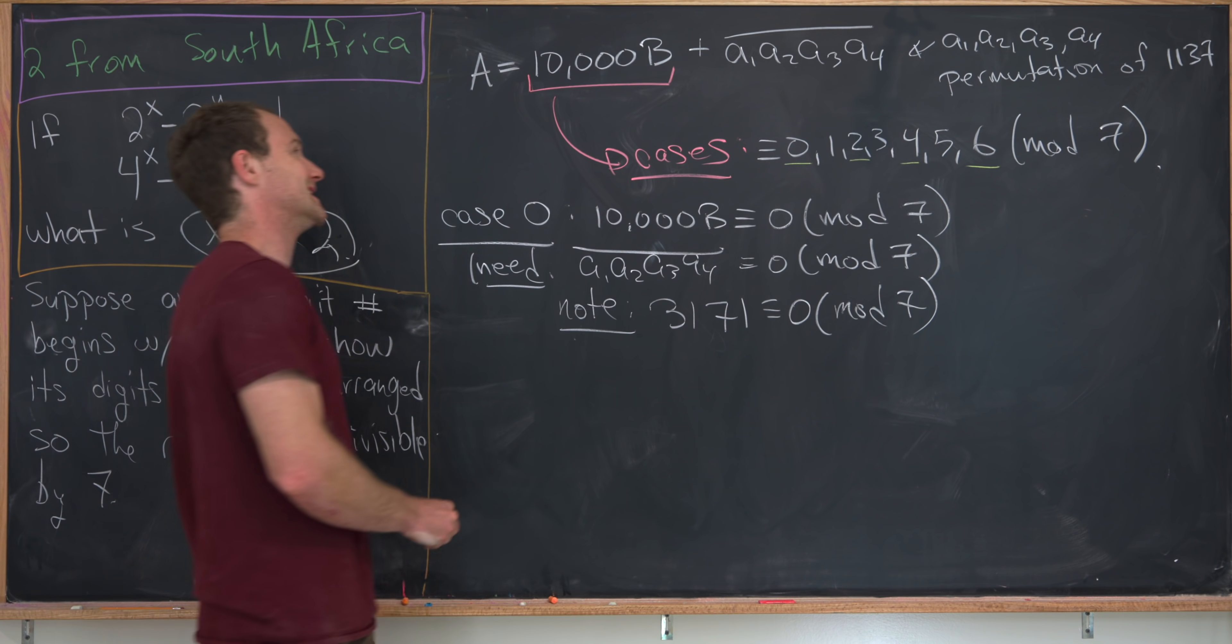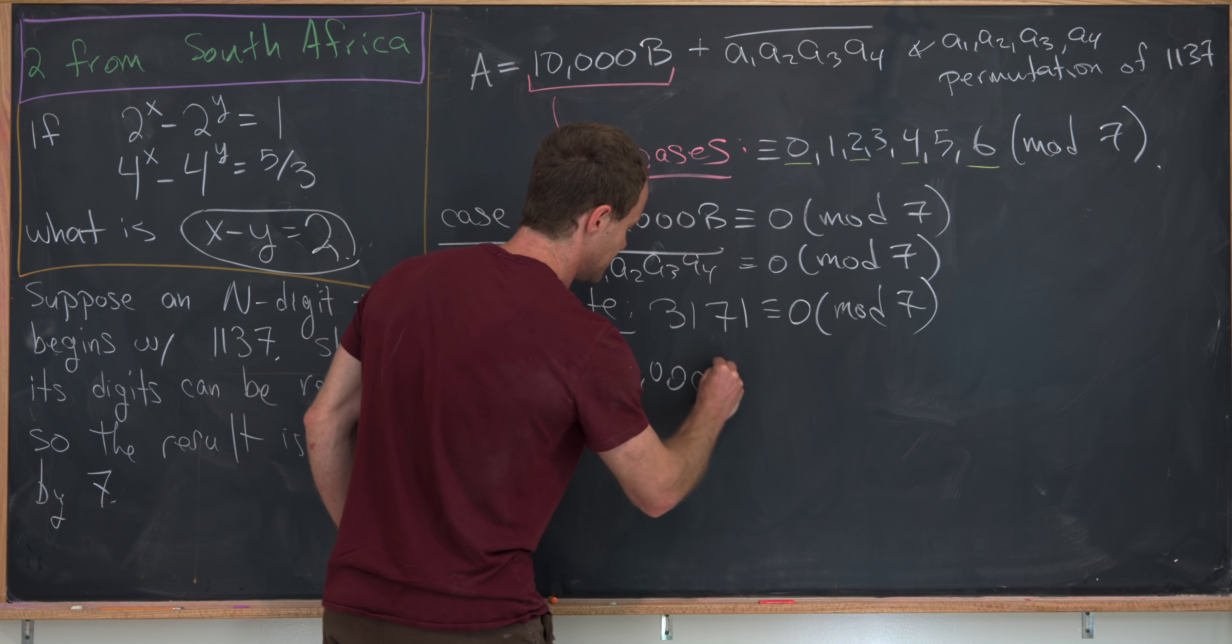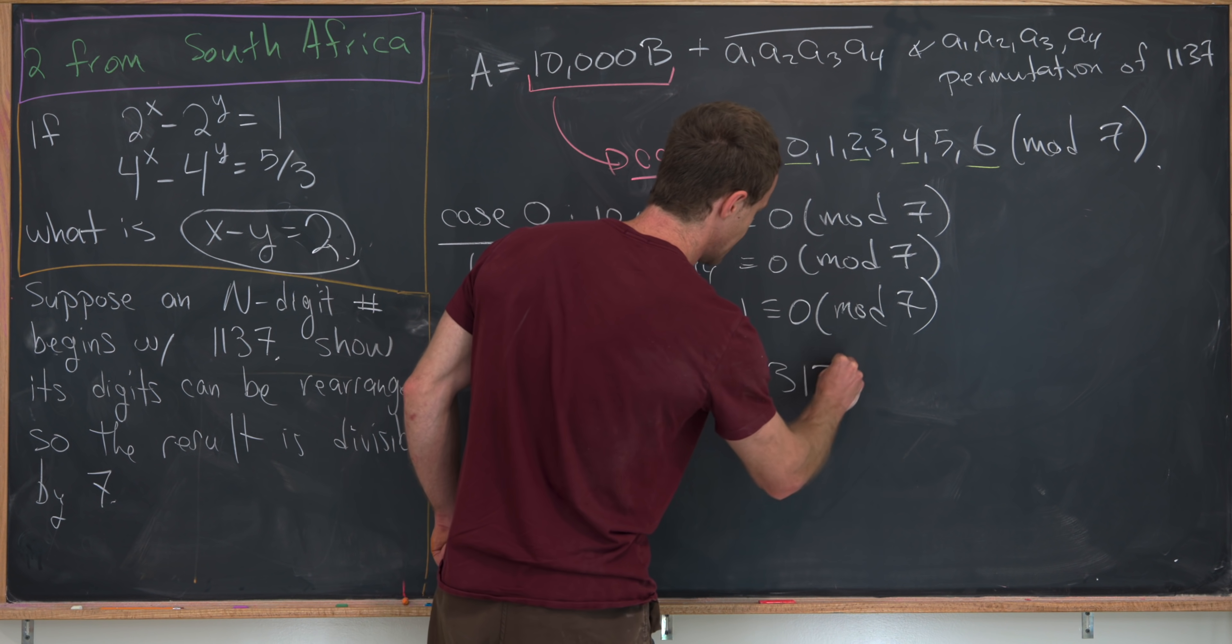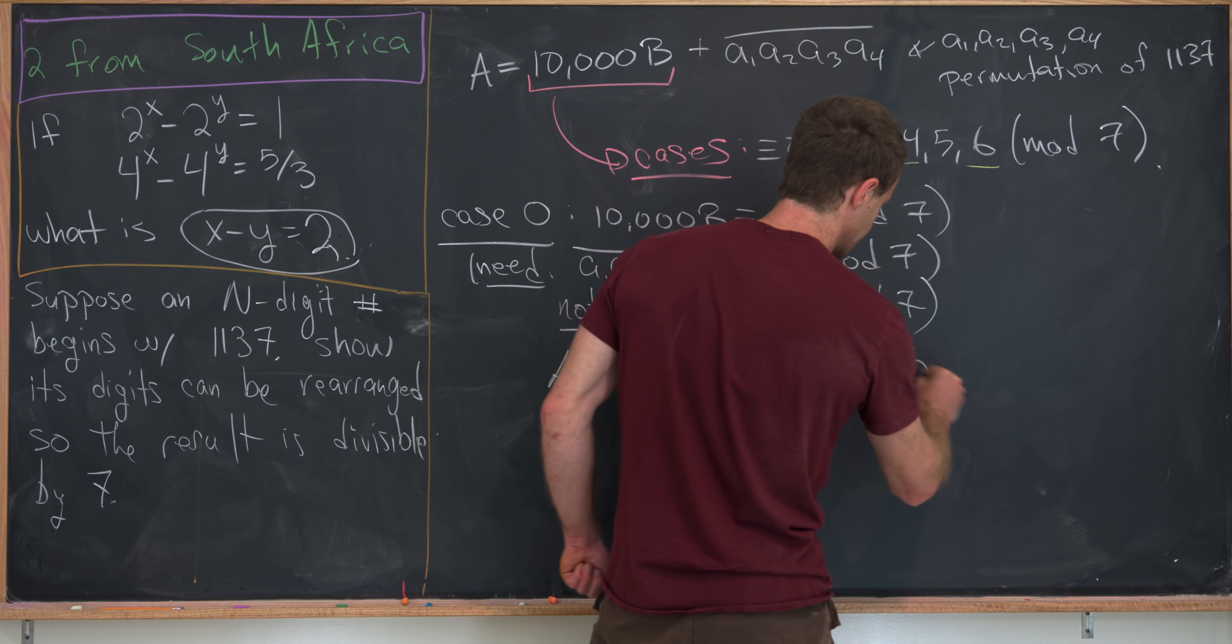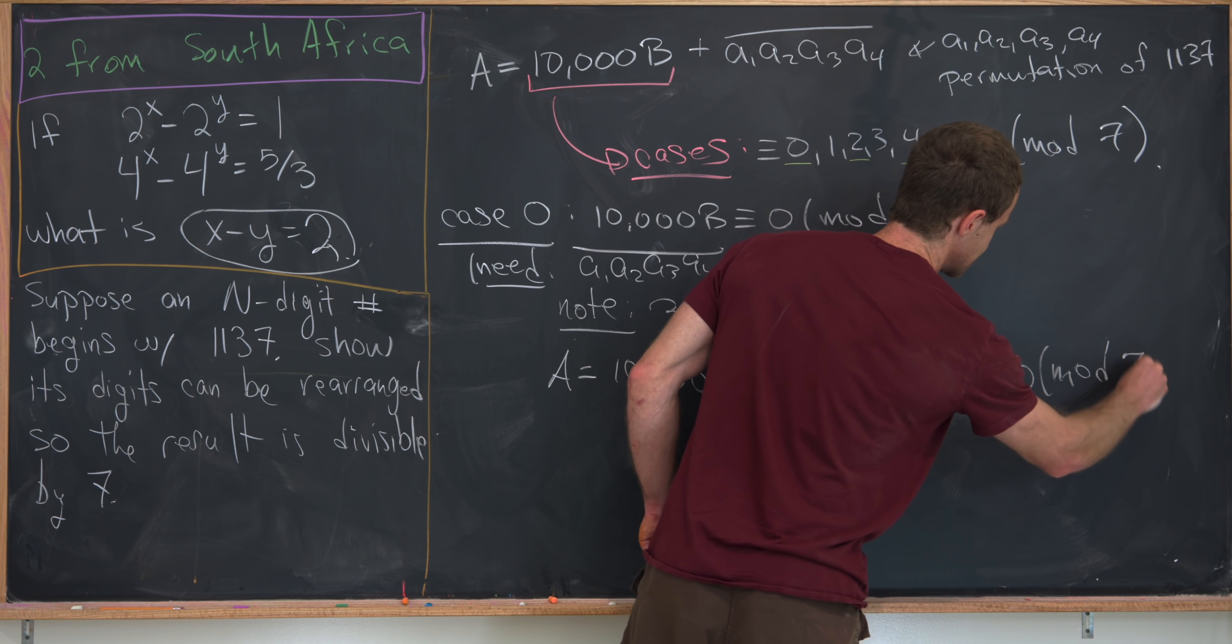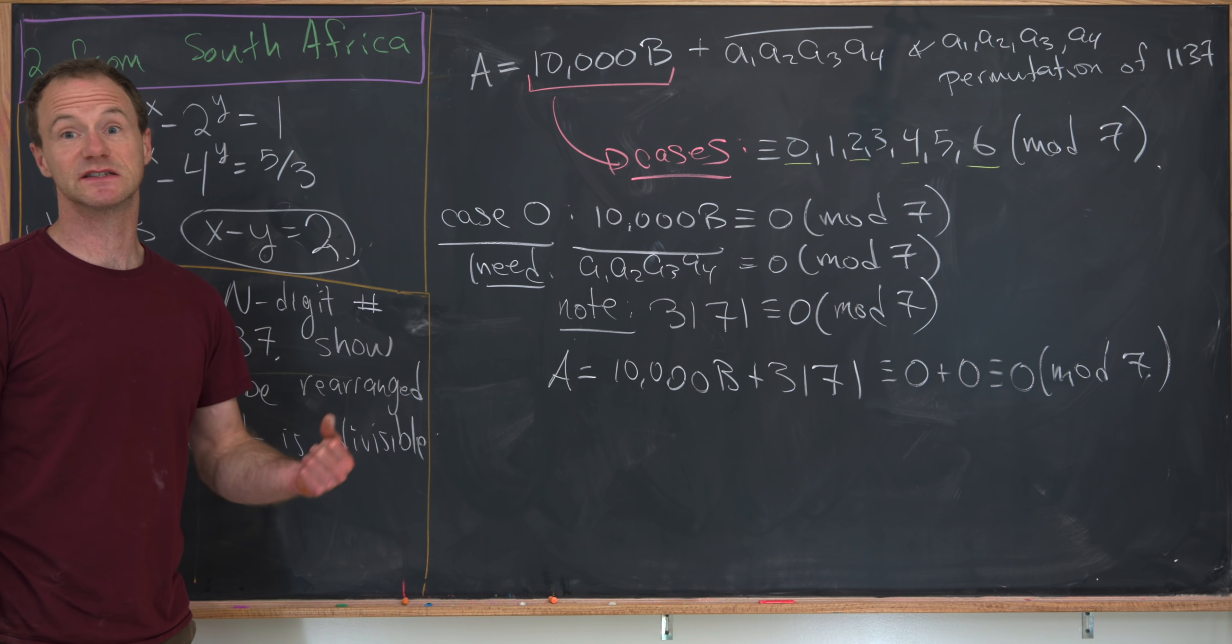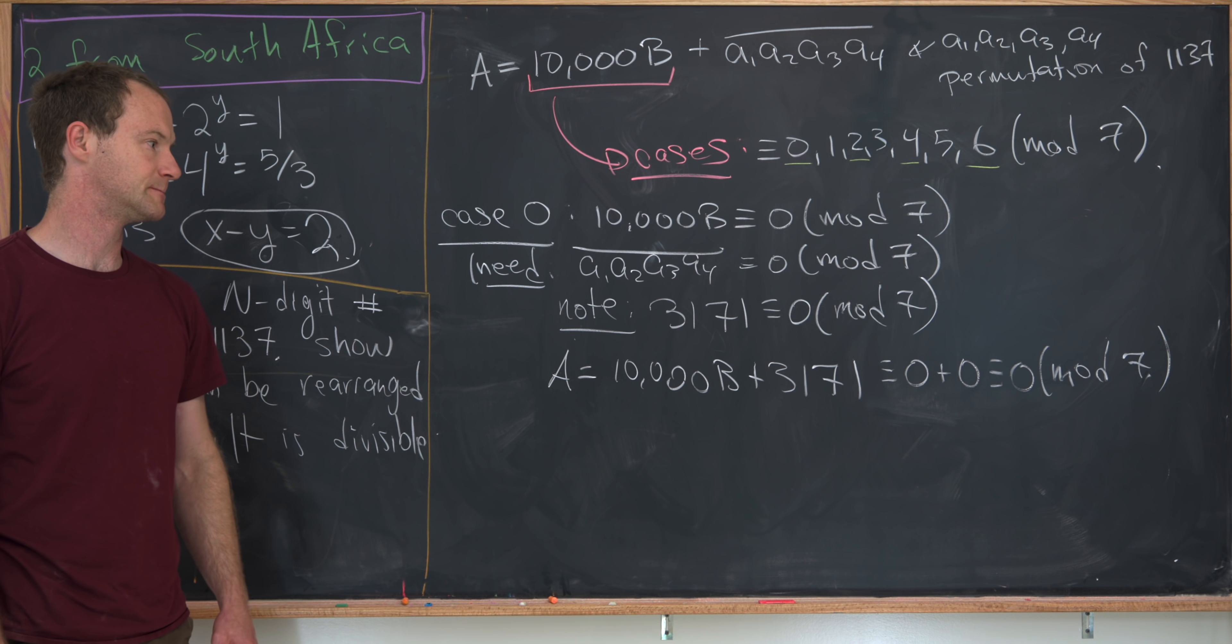That means that our number a is equal to 10,000 b plus 3, 1, 7, 1, which is congruent to 0 plus 0, which is congruent to 0 mod 7. But being congruent to 0 mod 7 is the same thing as being divisible by 7.